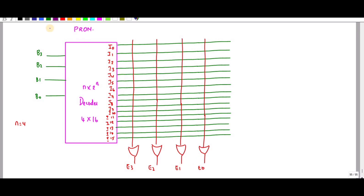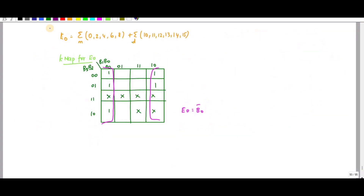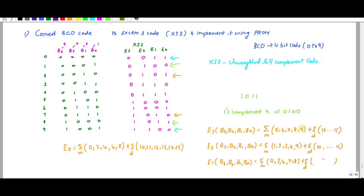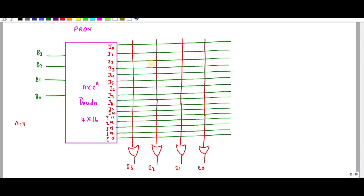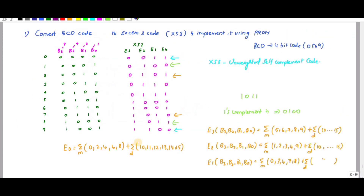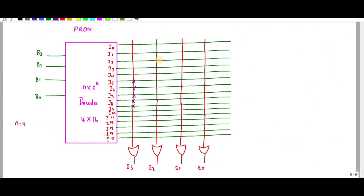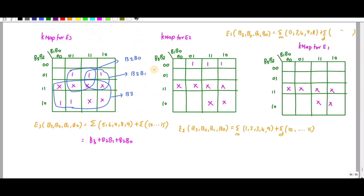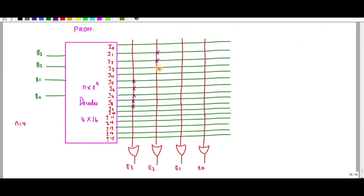Now I need to program the PROM. For E3, the minterms are 5, 6, 7, 8, 9 — so cross marks are placed at those positions. Don't cares are not marked. For E2, the minterms are 1, 2, 3, 4, and 9.